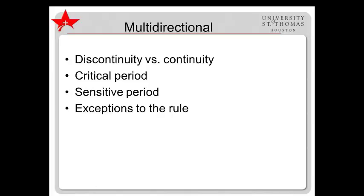A multi-directional view of development acknowledges that human growth is not always linear, not always steady, and not always forward. Episodes of discontinuity are common. However, continuity, gradual growth, or even stasis is common as well.